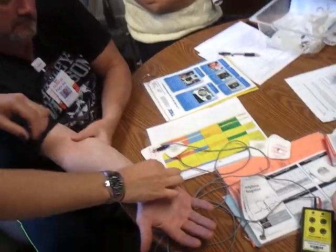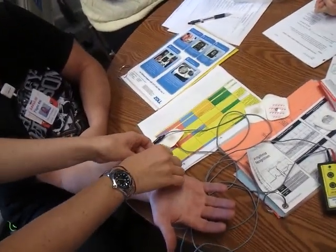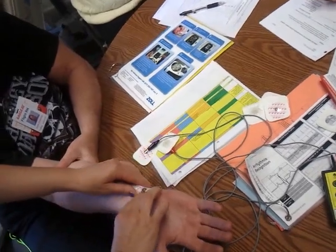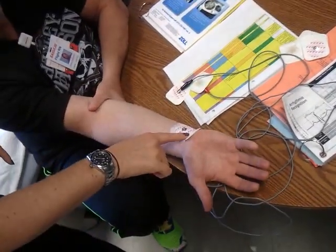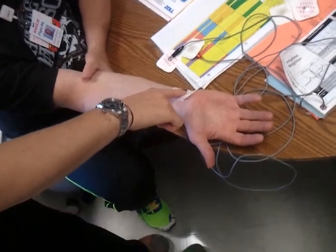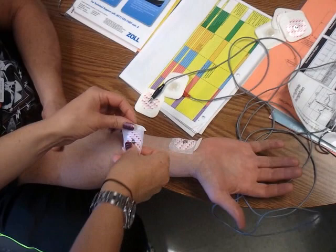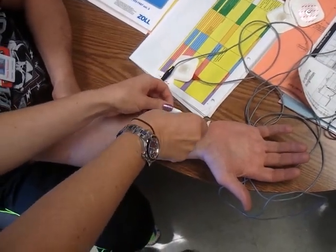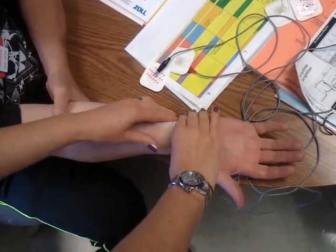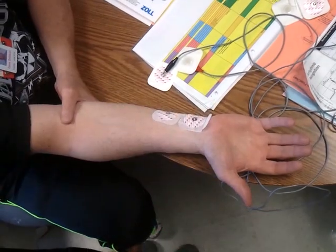The patches line up with the ulnar nerve. I don't even think we can move this over a little bit. Line up with the pinky. You're going to put one on the wrist area and then one about three to five centimeters up. So really they're kind of right next to each other as far as patch placement goes.